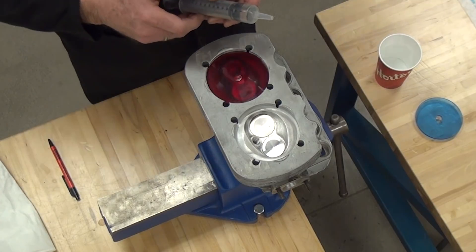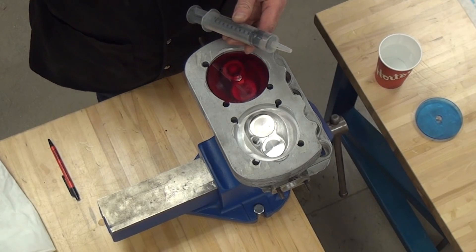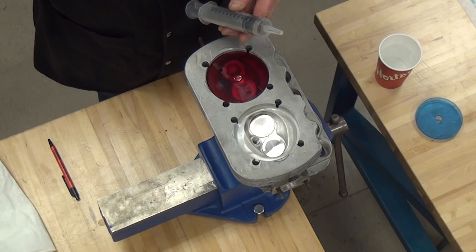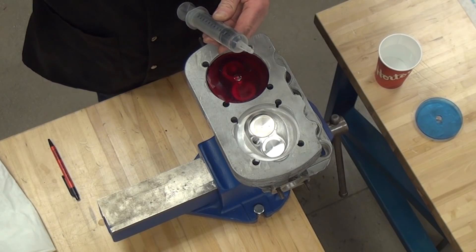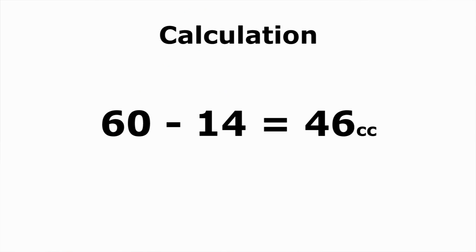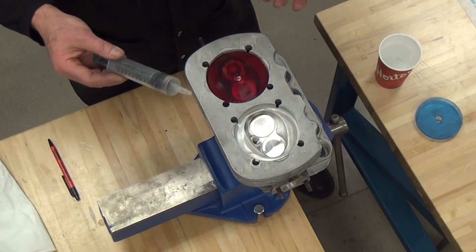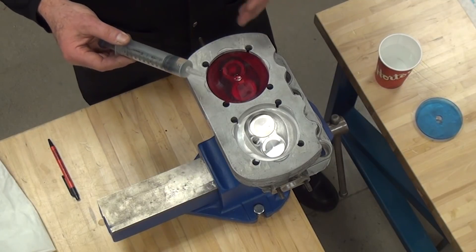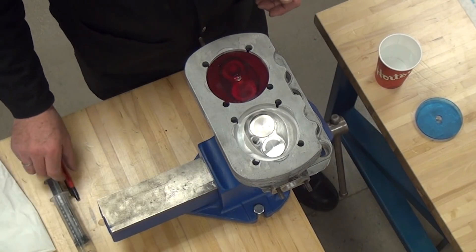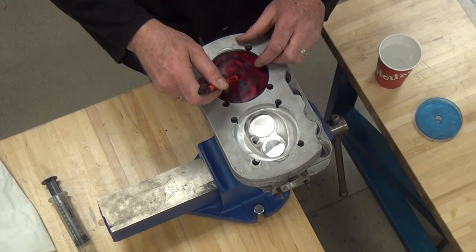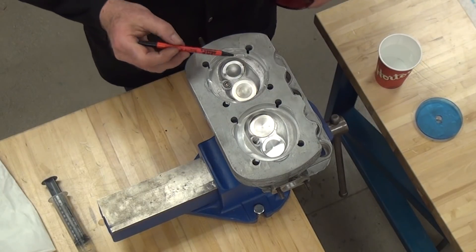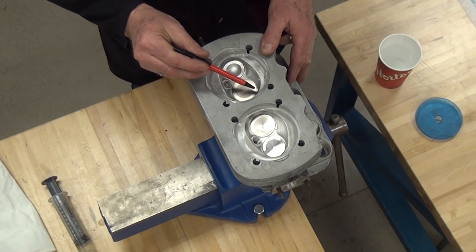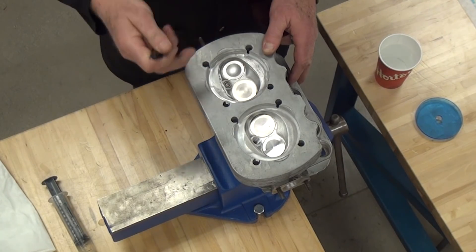Taking the difference: I started with 60cc and it looks like I have 14cc left, so I have 46cc in this particular chamber. You take the difference of what you put in and what is left — 46cc. I was looking for somewhere around 45 to 55cc; really 55 to 60 would be better. There is a little fluid out the side from wiggling, but you can see the fluid has just filled the combustion chamber. That is a small chamber.